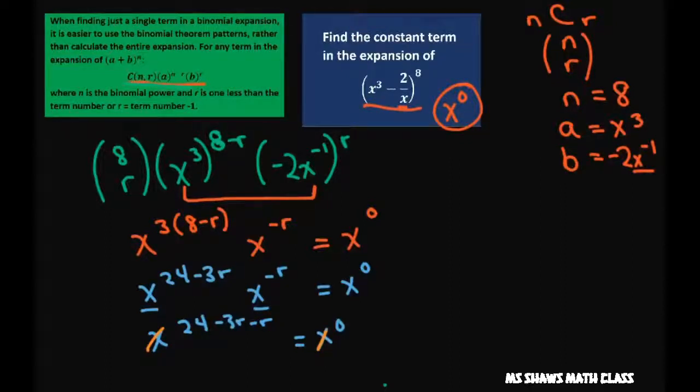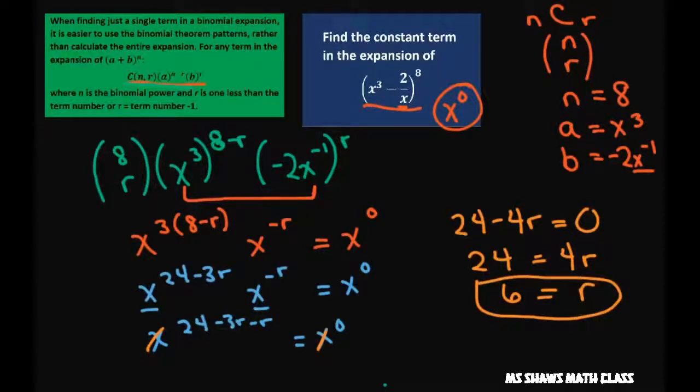So we have 24 minus 4r equals zero. So 24 equals 4r. Therefore r equals 6. Then all we're going to do is plug that in here and evaluate.